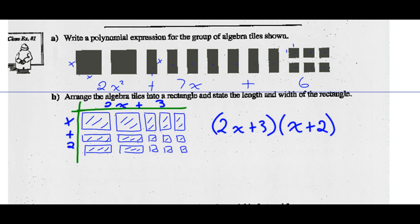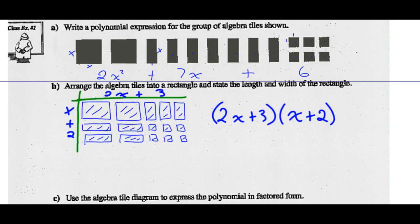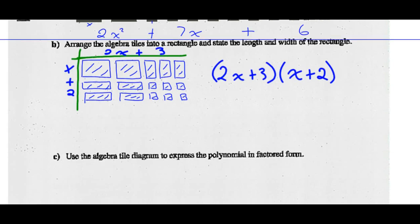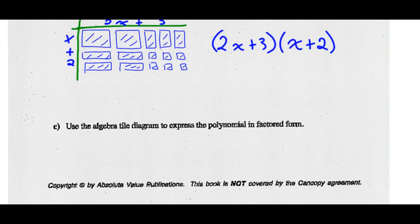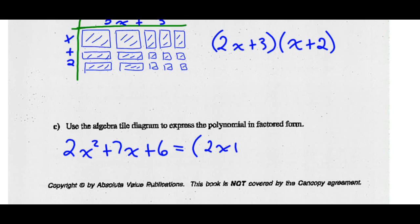If you can arrange the tiles into a rectangle, then you can factor any trinomial. Using the algebra diagram to express the polynomial in factored form: 2X squared plus 7X plus 6 equals 2X plus 3 times X plus 2.